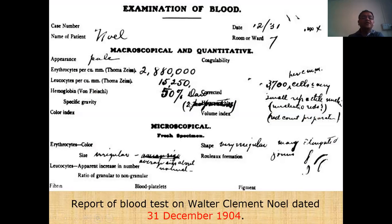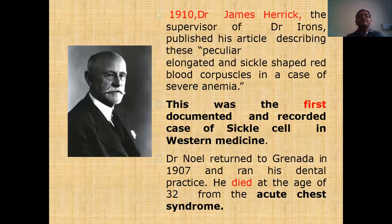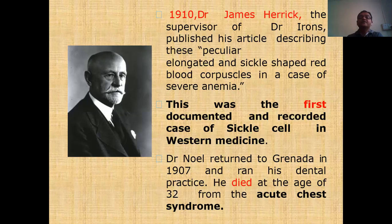It was observed that the total hemoglobin count was near about only 50% in this particular case. In 1910, his supervisor — the head of department — published an article in which the half-moon shaped, elongated, pear-shaped red blood corpuscles were documented. That was the first time this was recorded in Western medicine.